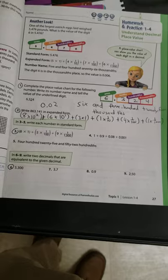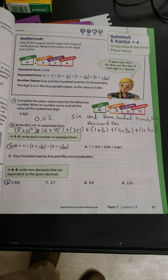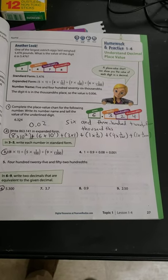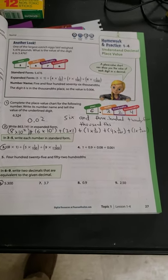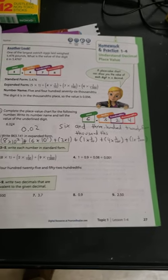So that is eight times ten to the two, plus six times ten to the one, plus three times one, plus one times one-tenth, plus four times one-hundredth, plus one times one-thousandth.